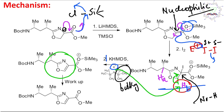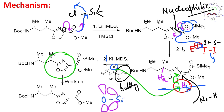We know that oxazoles are aromatic and very stable. I have already discussed a lecture on the synthesis of oxazoles, which you may visit for better understanding. This reaction is driven by aromaticity. Now, in the workup stage, the silicon-oxygen bond breaks because the lone pair of oxygen is delocalized into the energetically accessible vacant d-orbital of silicon.